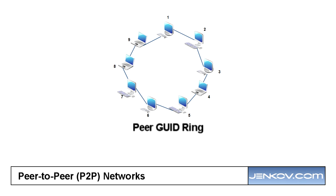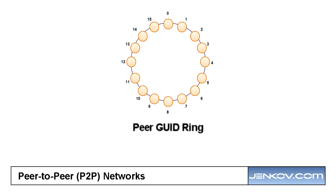After assigning a GUID to every peer in the network, the peers are organized into a virtual ring, ordered according to their GUID. At the top we have peer 1, then peer 2, 3, 4, 5, 6, 7, 8, and 9. This organization is purely virtual and logical — it does not mean that peer 1 is close to peer 2 geographically. It is just a virtual logical way of organizing the peers into a network.